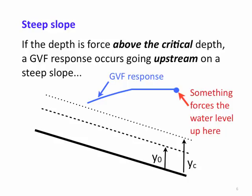The important point is that when we're subcritical — even on a steep slope — the GVF response moves upstream, not downstream.